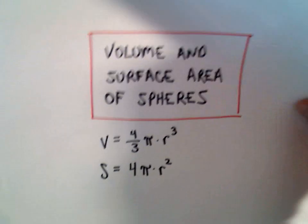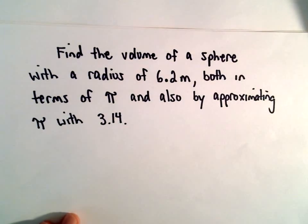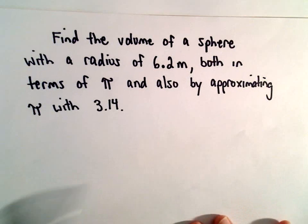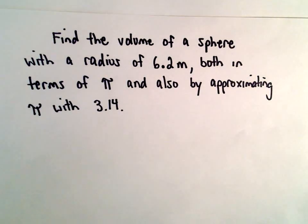So nothing too terrible. So we're going to find the volume of a sphere with a radius of 6.2 meters both in terms of pi and also by approximating pi with 3.14.